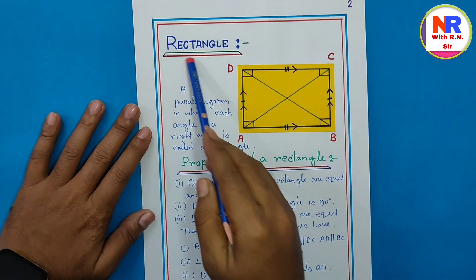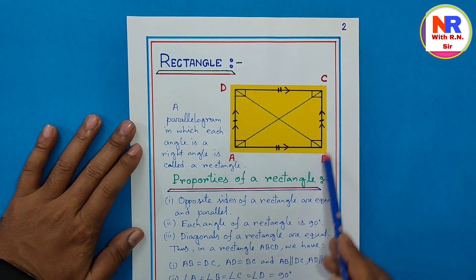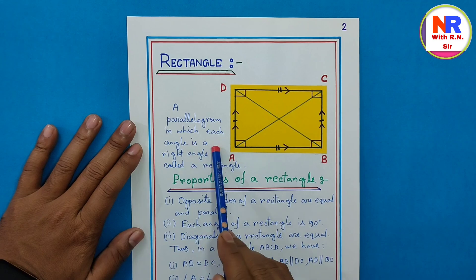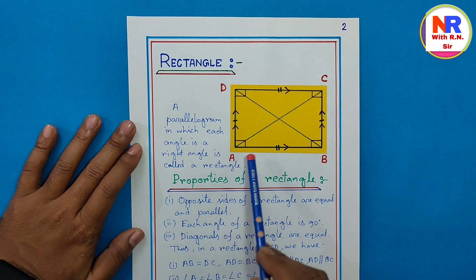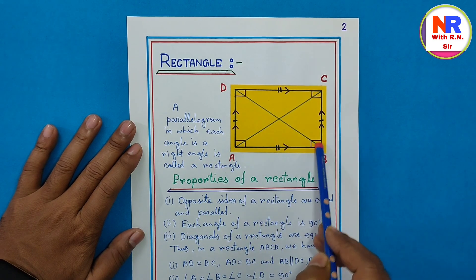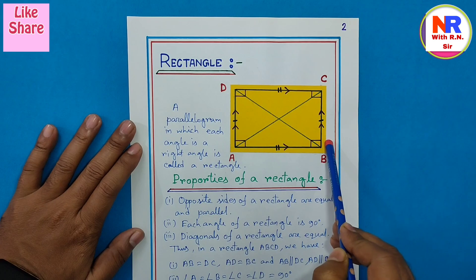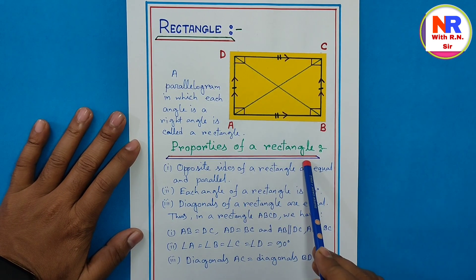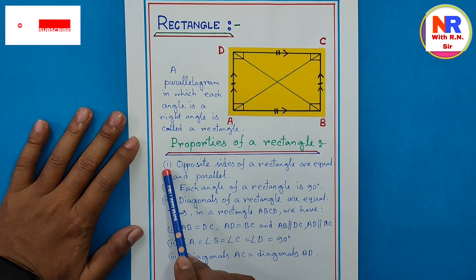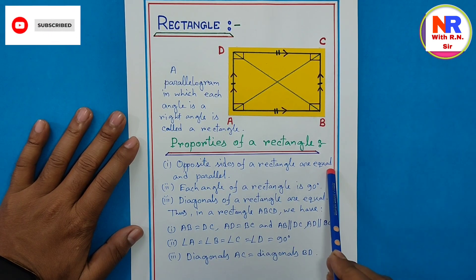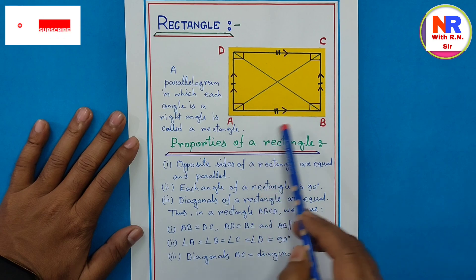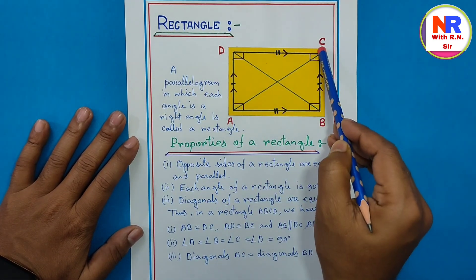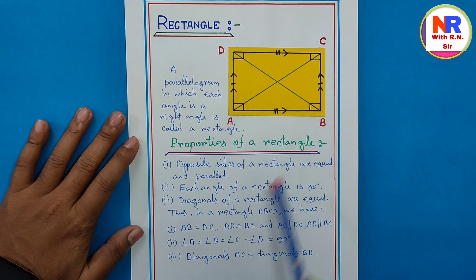Page number 2 — rectangle. You can see ABCD is a rectangle here. A parallelogram in which each angle is a right angle is called a rectangle, meaning angle A, angle B, angle C, and angle D are all 90 degree angles. Properties of a rectangle: point number 1 — opposite sides of a rectangle are equal and parallel, meaning AB is opposite to CD, and AD is opposite to BC — equal length and parallel both.